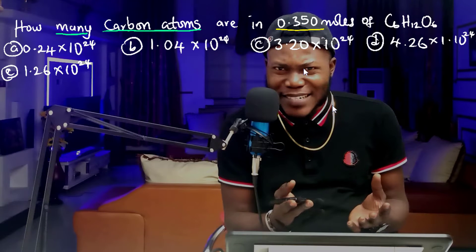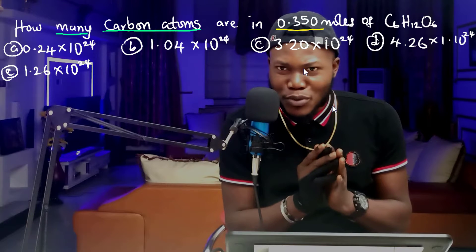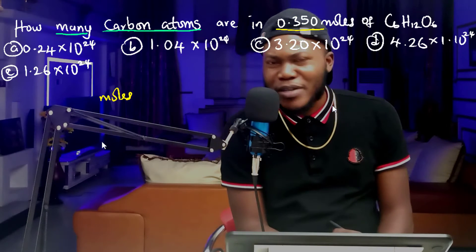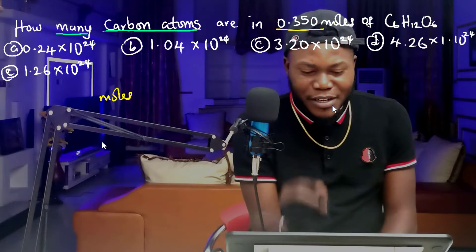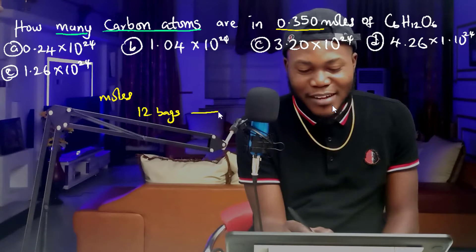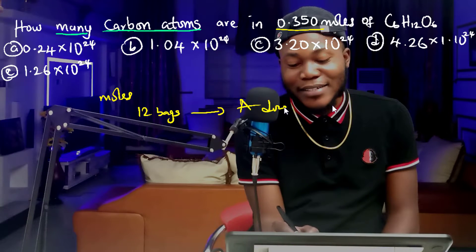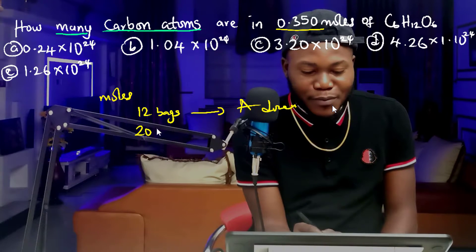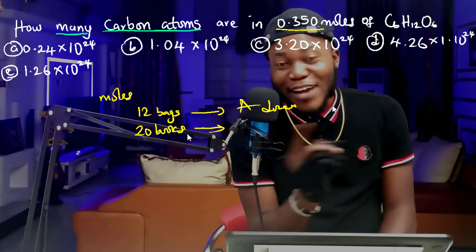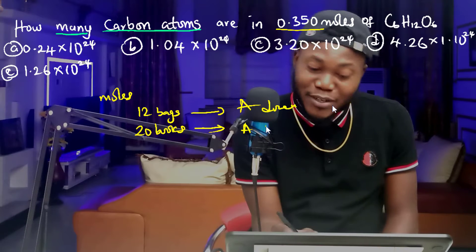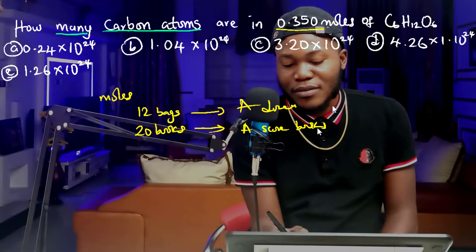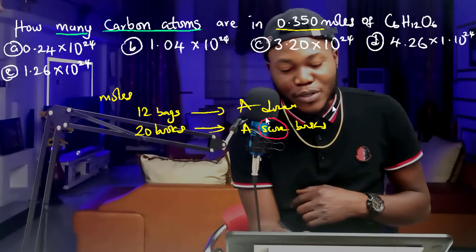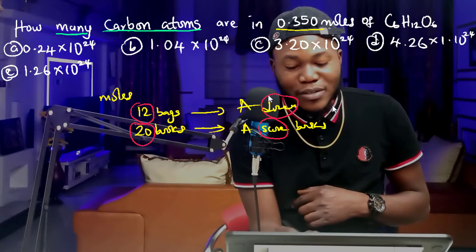What does this mean? The first thing you want to define is the term 'moles.' What is a mole? If I have 12 bags, I can say I have a dozen bags. If I have 20 books, I can also say I have a score of books.